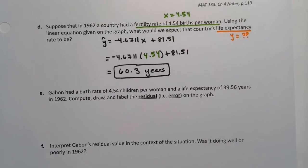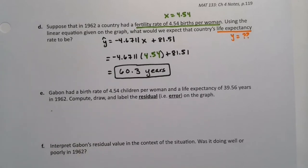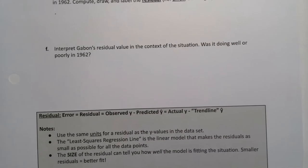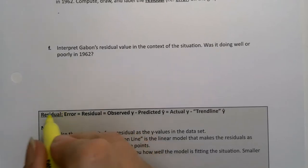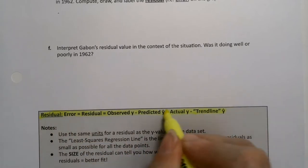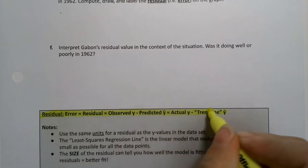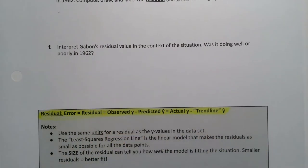Now, there was a real country named Gabon that had a birth rate of 4.54 children per woman and a life expectancy of 39.56 years in 1962. We're gonna compute, draw, and label the residual, which is the error on the graph. Okay, so there's what we found it to be, right, which is 60.3, and then there's what it actually was. So the residual formula is, I put the cart a little bit before the horse, it's down here. You can see the residual formula is the observed y minus the predicted y-hat. That's what the y-hat stands for. The hat means that it's a prediction, it's not what it actually was. Ys are what it actually is, y-hats are what we predict it will be.